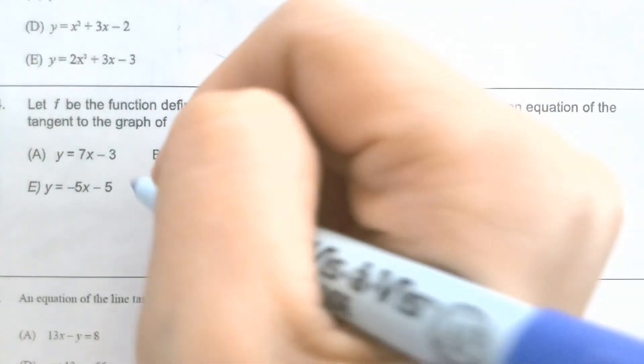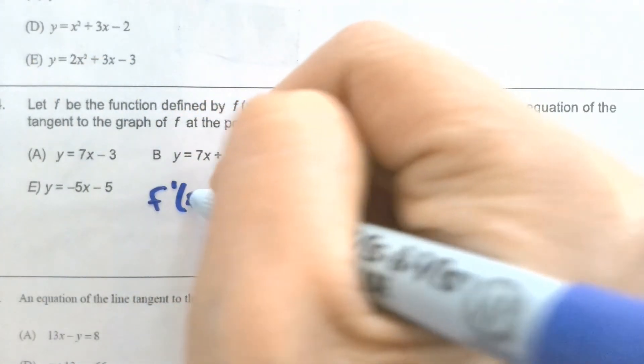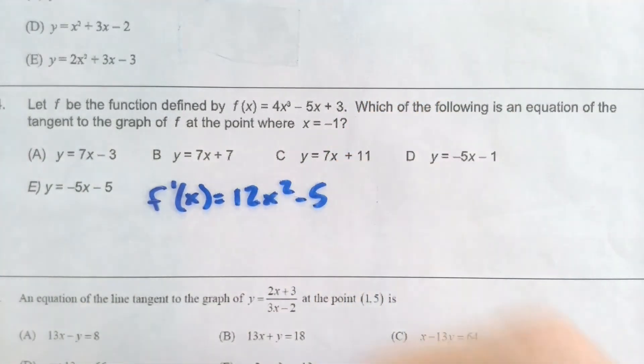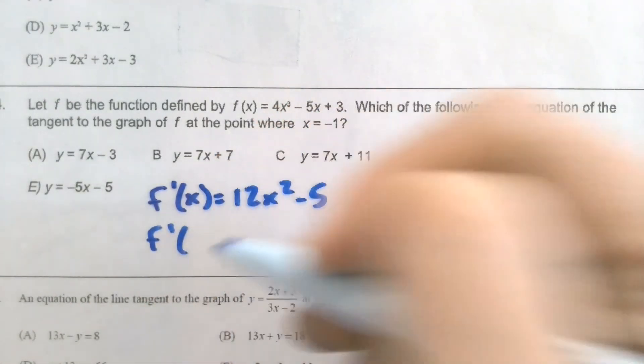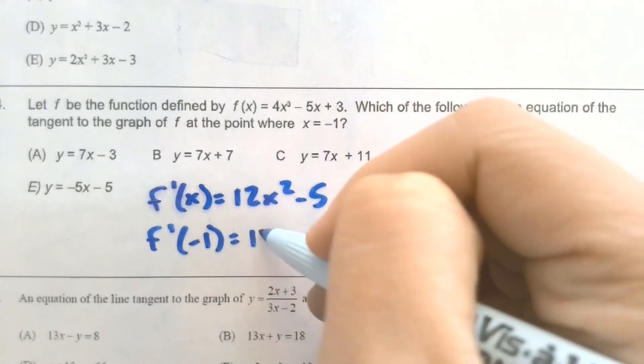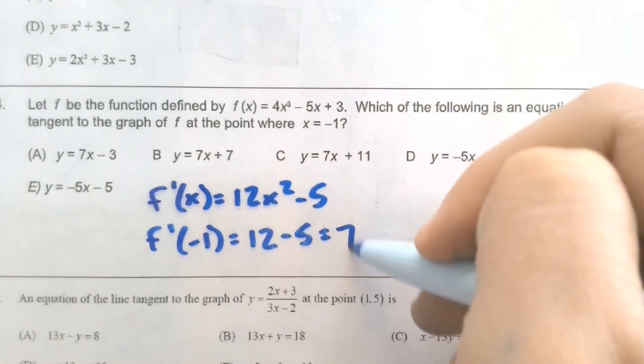So for this example, we would find f prime first is 12x squared minus 5. In order to find the instantaneous slope, we're plugging in negative 1. So we'll get a positive 12 minus 5, so our slope is 7.